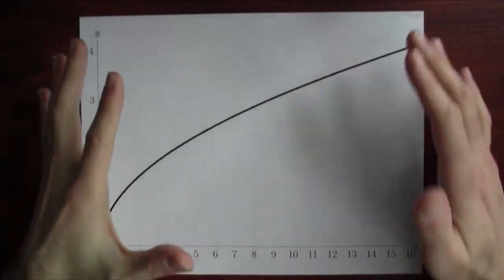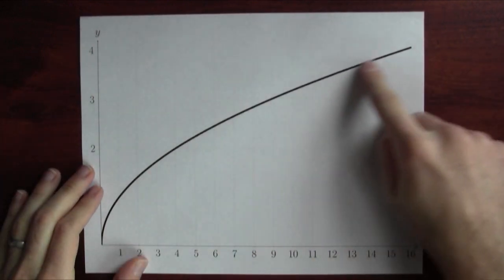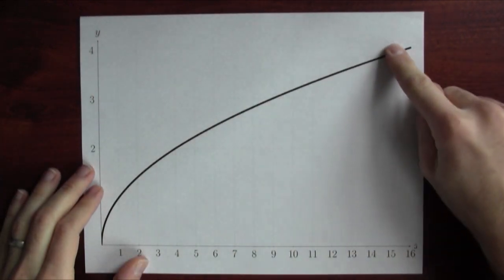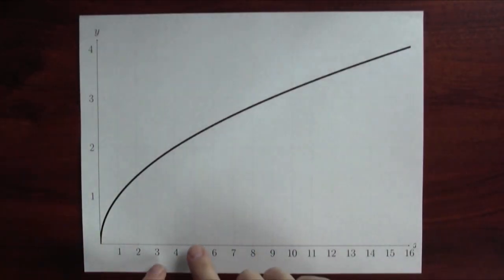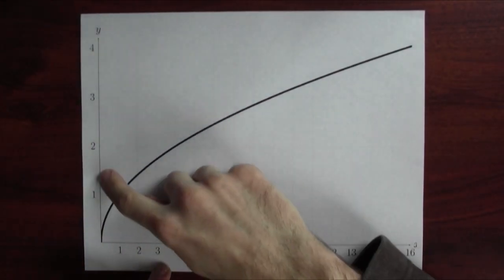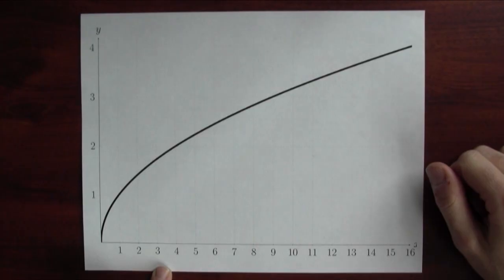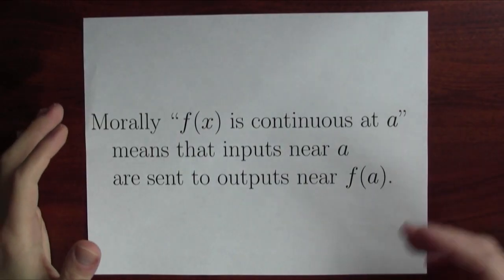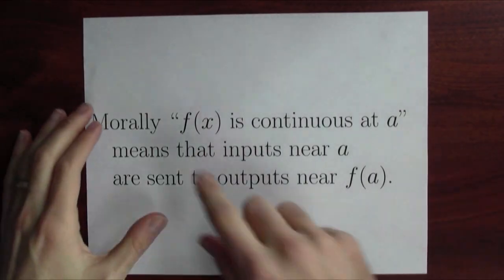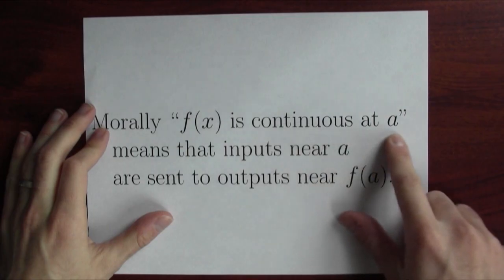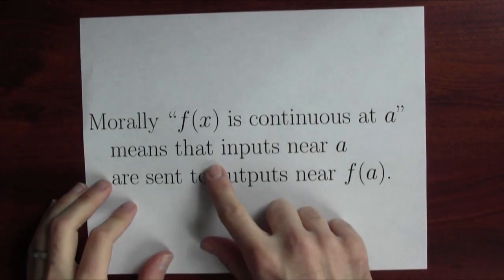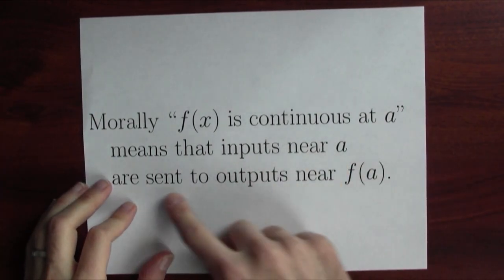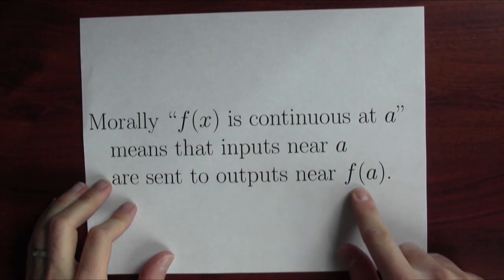The numbers show that couldn't have been the graph of the square root function. But what does the graph of the square root function look like? This is what it looks like — it looks continuous, it's one nice curve. In particular, nearby inputs give rise to nearby outputs. Let's try to capture the concept of continuity a bit more precisely than just a picture on a graph. Here's a moral definition of what I mean when I say f of x is continuous at a: inputs near a are being sent to outputs near f of a.